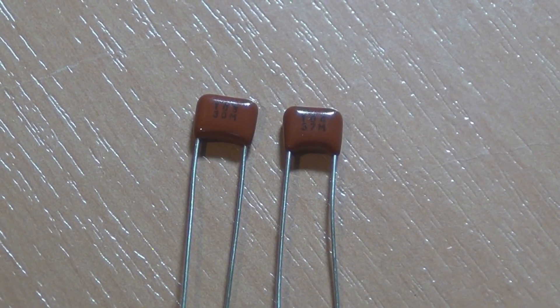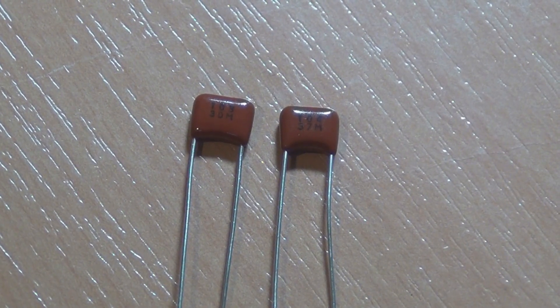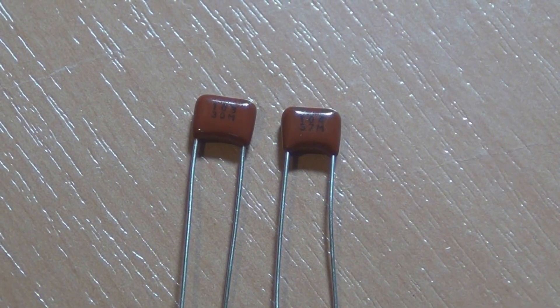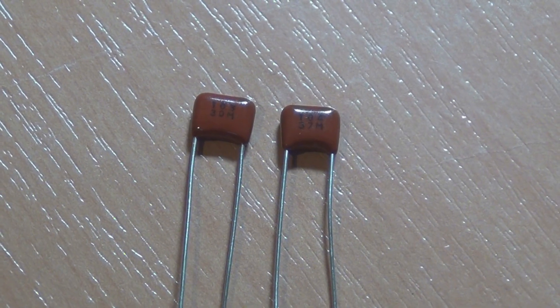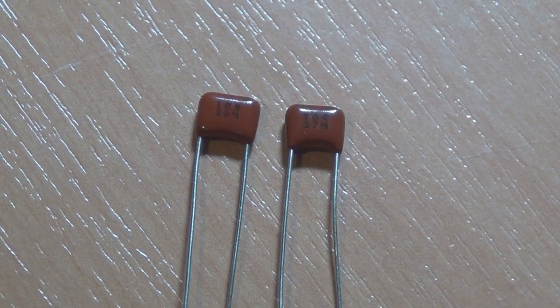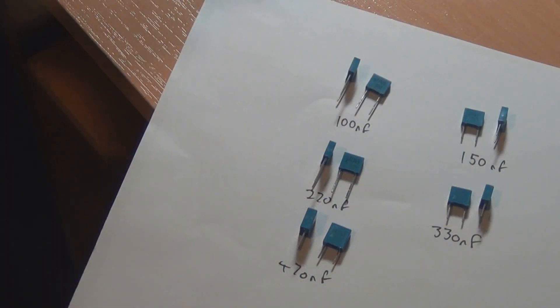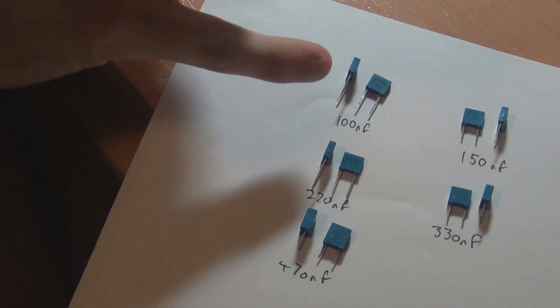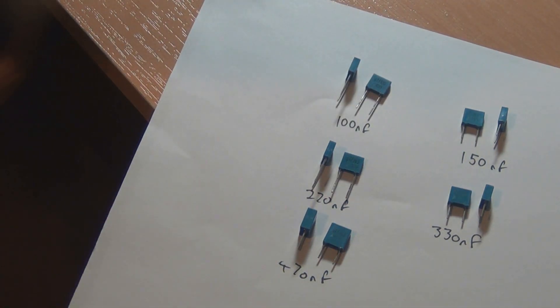So what we can get from this is up to 100nF with EPCOS and ECQ capacitors you don't need to worry about the size changing. It's always the same size. But once you go over 100nF then the dimensions generally start to change. So let's have a look at a few of the EPCOS over 100nF compared to 100nF. You've got 100nF at the top. 150 is pretty much the same size.